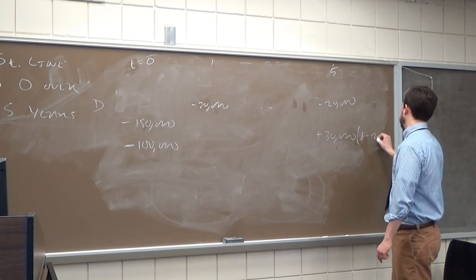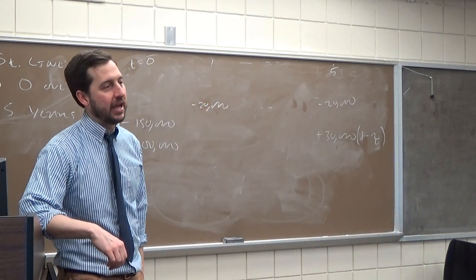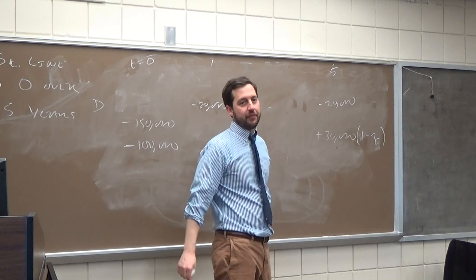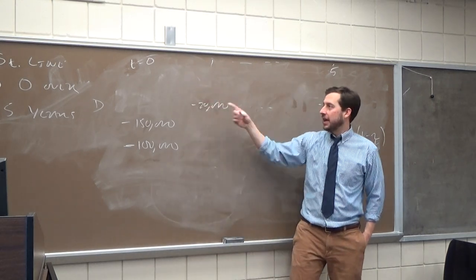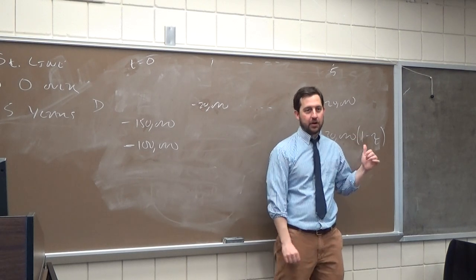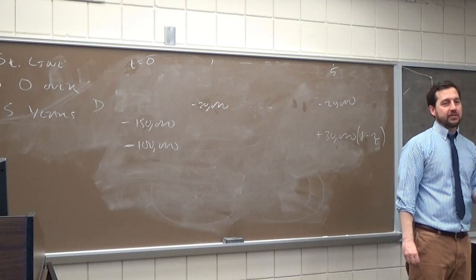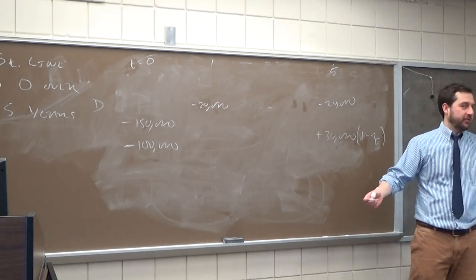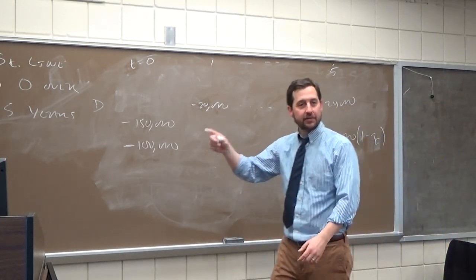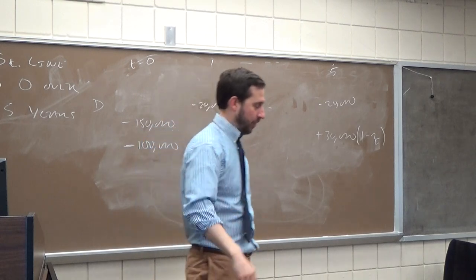We have to pay taxes on the salvage value — that's the after-tax salvage value. If the machine is depreciated straight-line to zero, and we sell it for $30,000, we pay taxes on the full $30,000. If instead it were depreciated to $10,000, we'd only pay taxes on $30,000 minus $10,000. On exams, I'll generally use straight-line to zero to keep things straightforward.